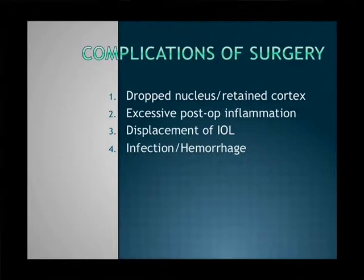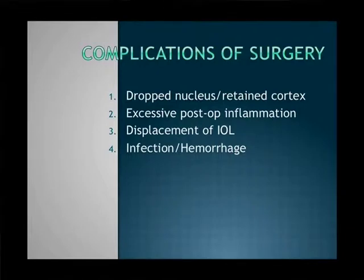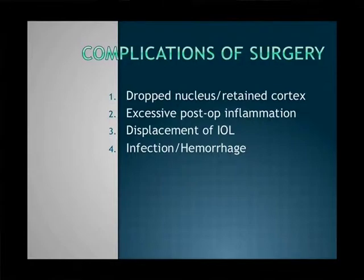The serious complications include dropped nucleus and retained cortex, which typically happen with very advanced cataract — where the nucleus becomes extremely hard and the capsule becomes loose, potentially causing the nucleus to fall into the back of the eye, requiring a second surgery. That risk is less than 0.5%. Retained cortex — small particles staying in the eye — can generally be treated with medication without returning to surgery.